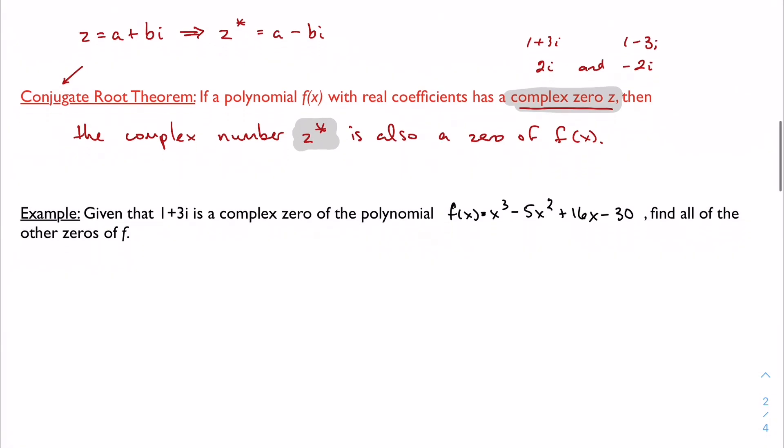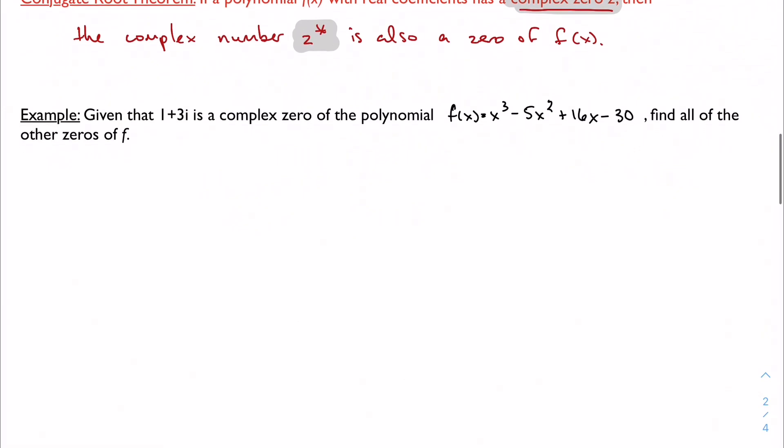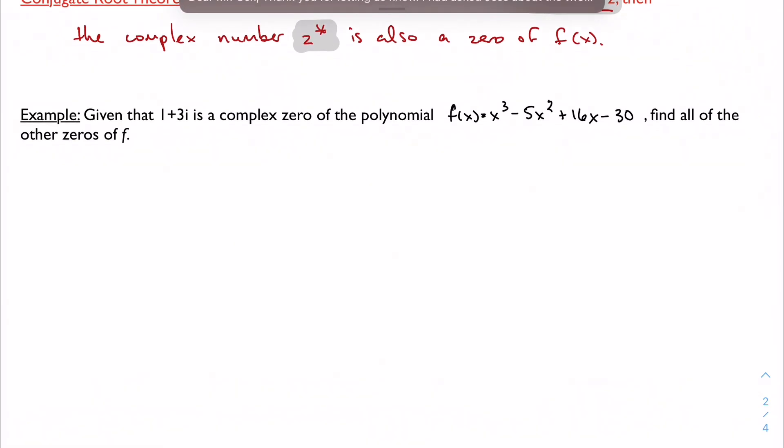Spoiler alert, because that's what we need for this example here. Given that 1+3i is a complex zero of the polynomial given, find all of the other zeros of f.